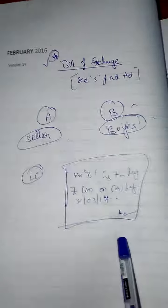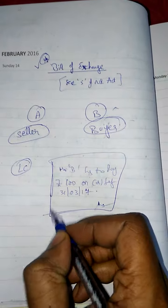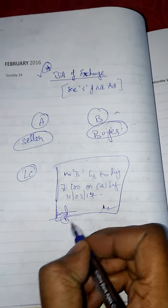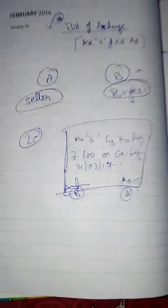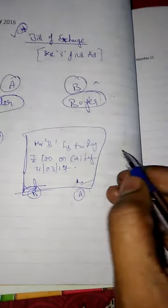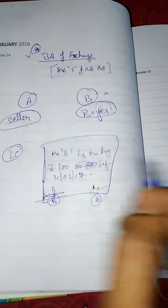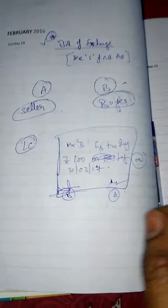The seller A makes the bill and sends it to B. B accepts the bill and signs it, accepting that he needs to pay A rupees 100 on or before 31st March 2017.